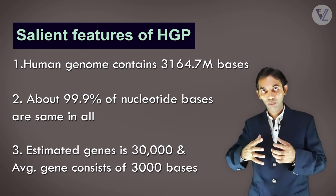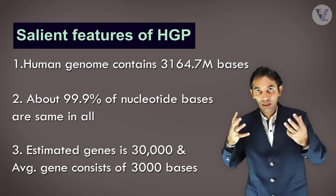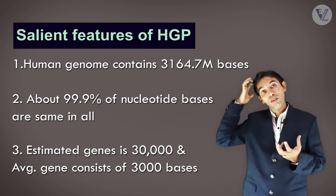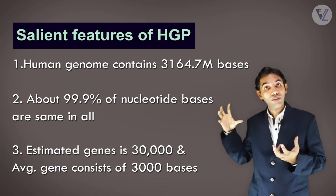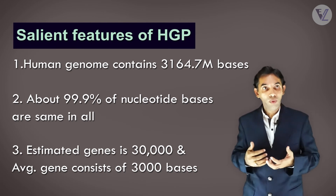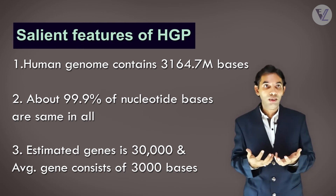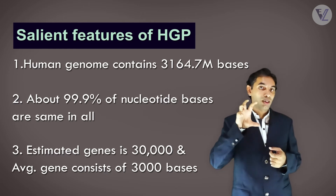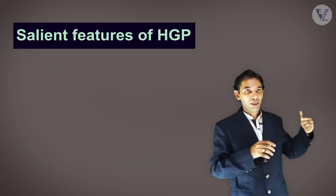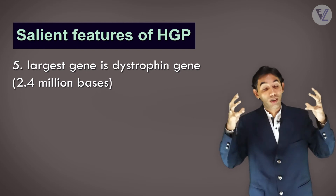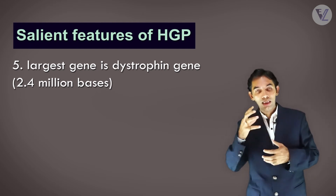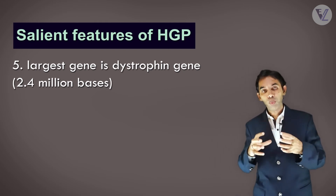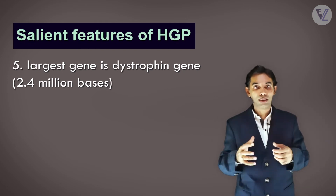An average gene consists of about 3,000 bases. Although the goal was to identify 20,000 to 25,000 genes, the actual outcome was approximately 30,000 genes. The largest known human gene is the dystrophin gene, which contains about 2.4 million bases.